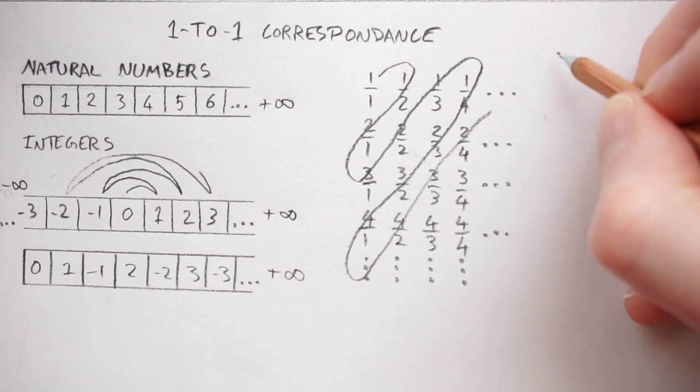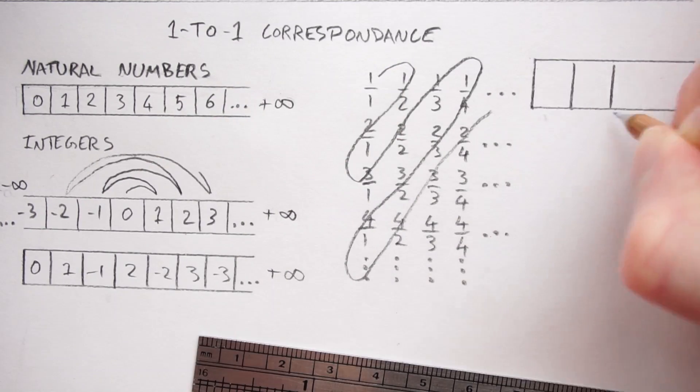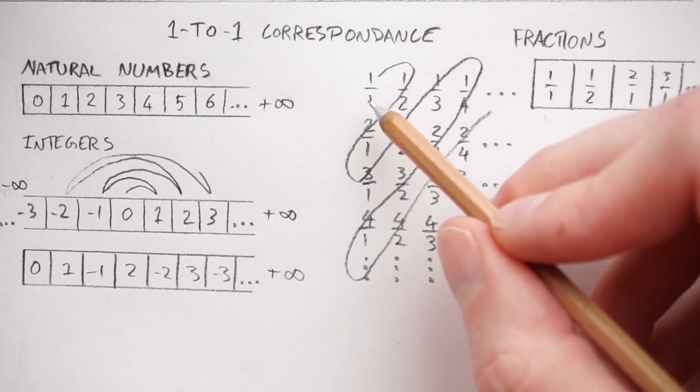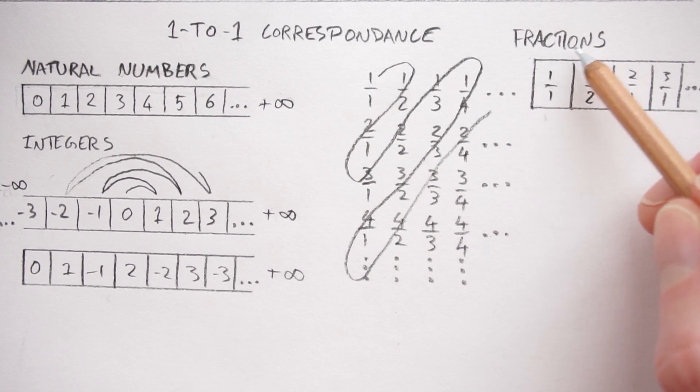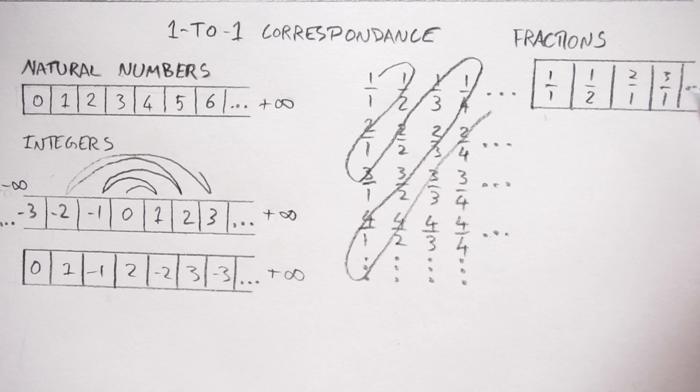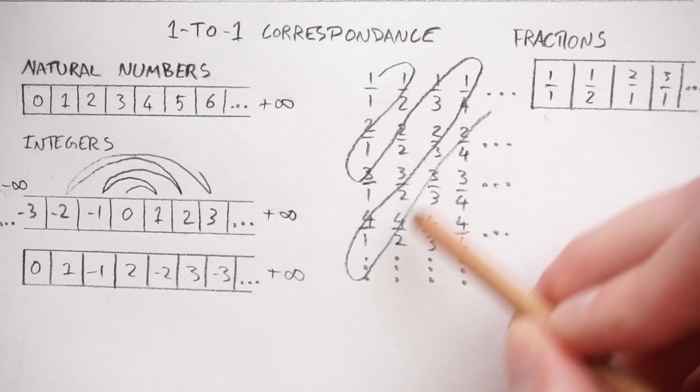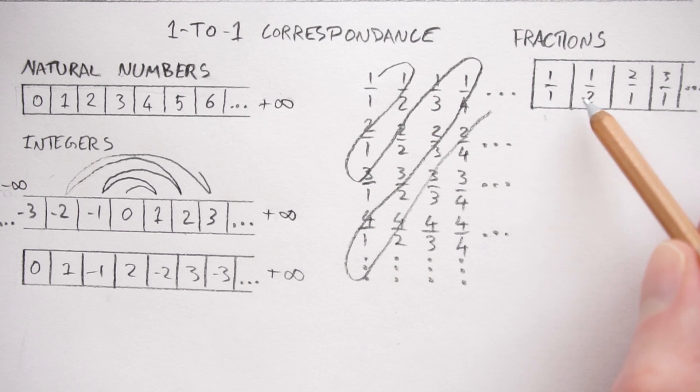So you can see what I've done. I can express all of the fractions in a set of numbers that start somewhere and keeps on going up until infinity. But this will actually contain all of the possible fractions you can have.